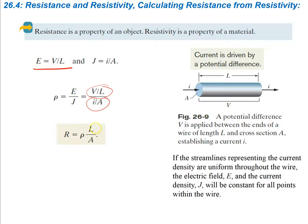So resistivity is a property of the material, while resistance is the property of the specific object or conductor we're talking about. If the streamlines representing the current density are uniform throughout the wire, the electric field E and the current density J will be constant for all points within the wire.